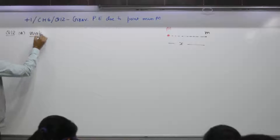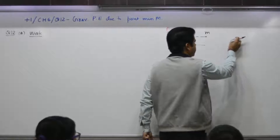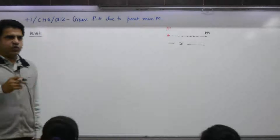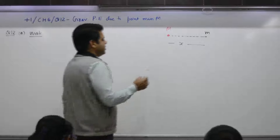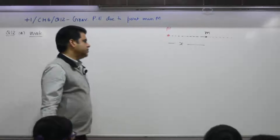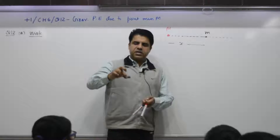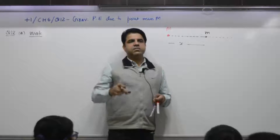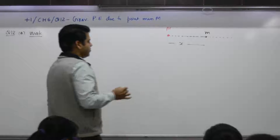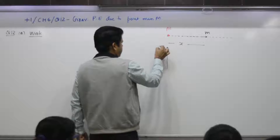The first part is to find the work done if you move object small m from x to infinity. You will have to do work because the force is attractive. Just like from the surface of the earth, if you move an object away, you have to do work.